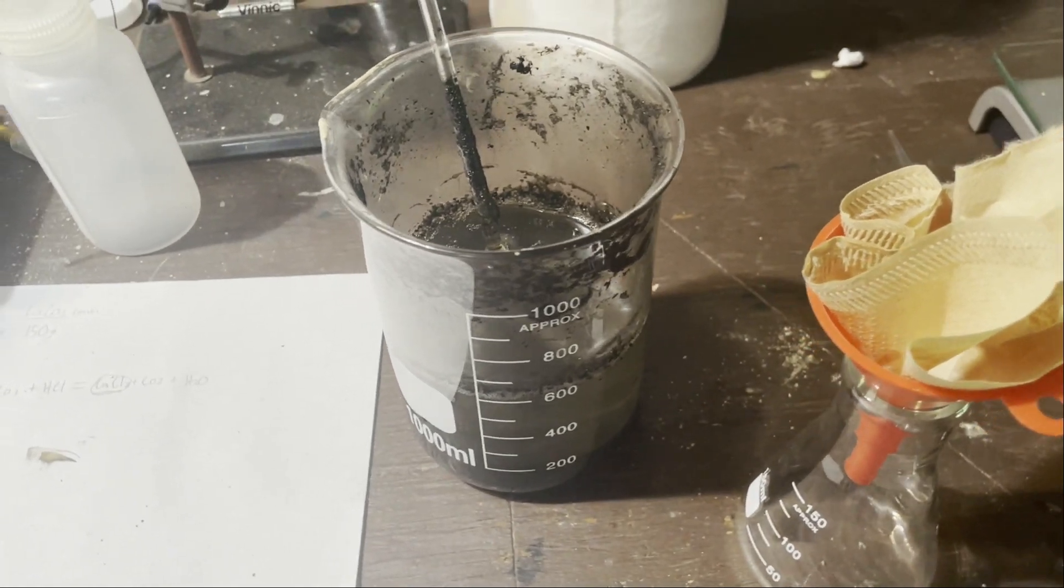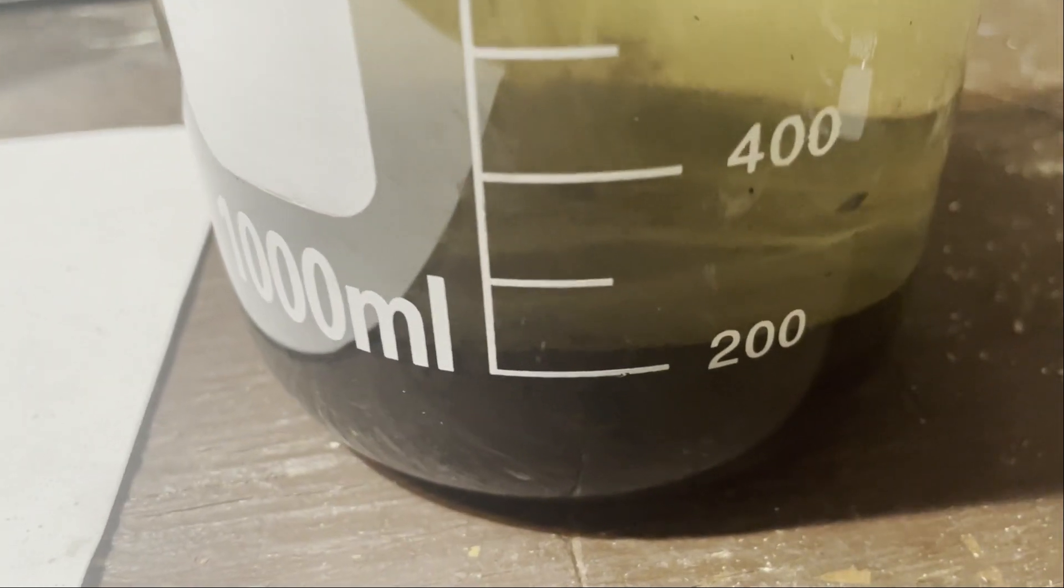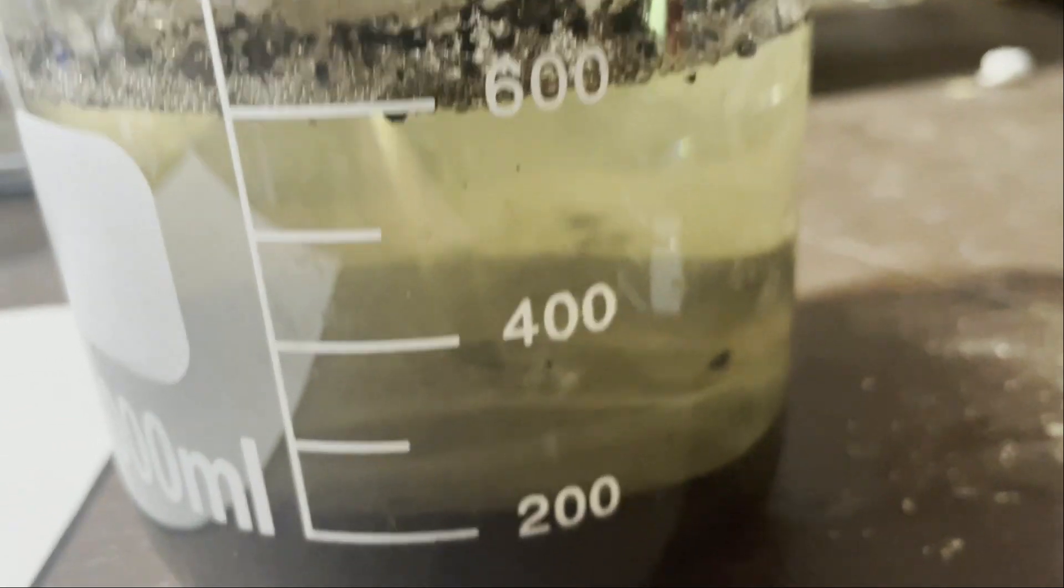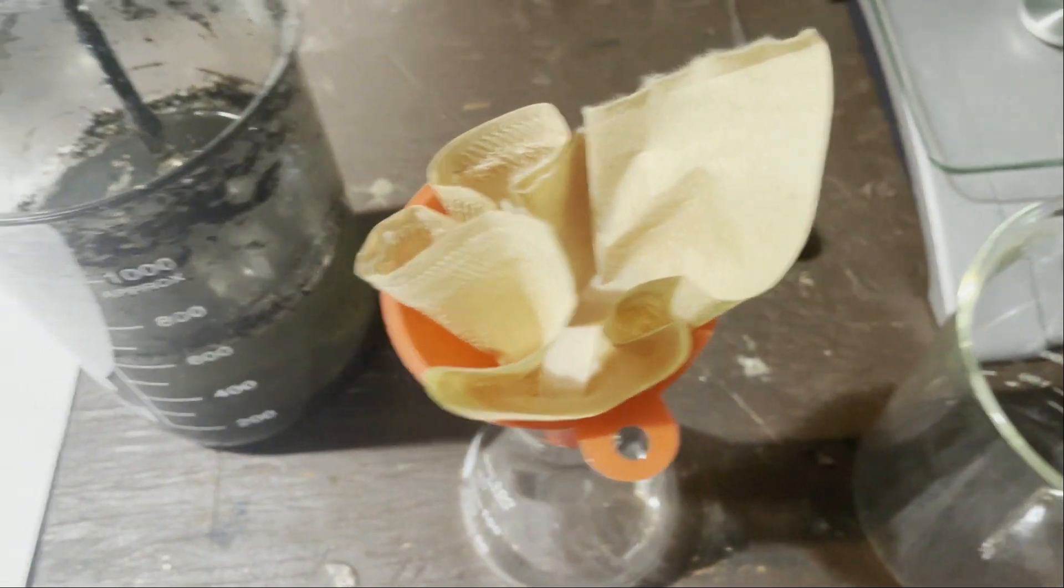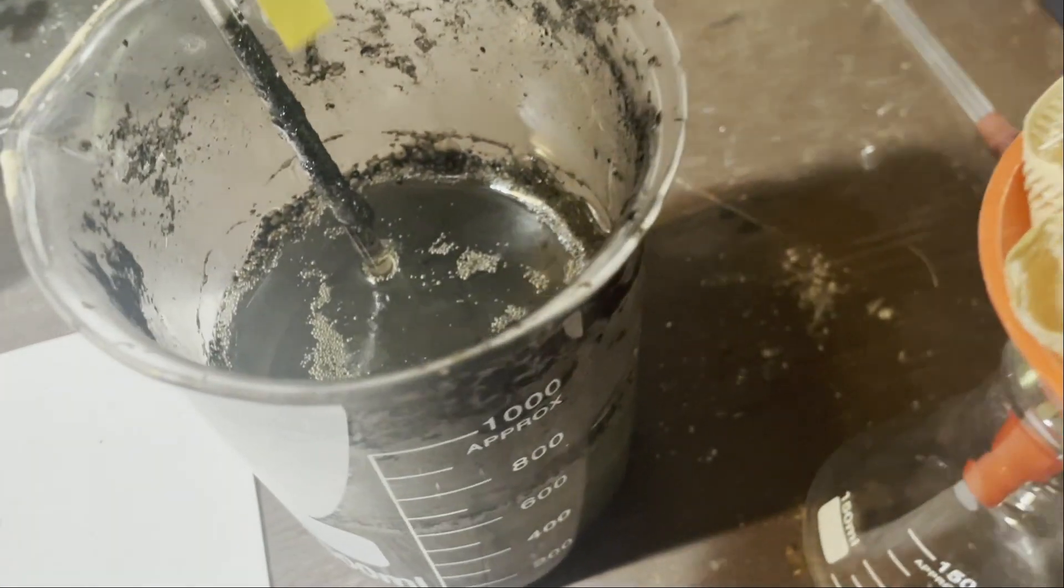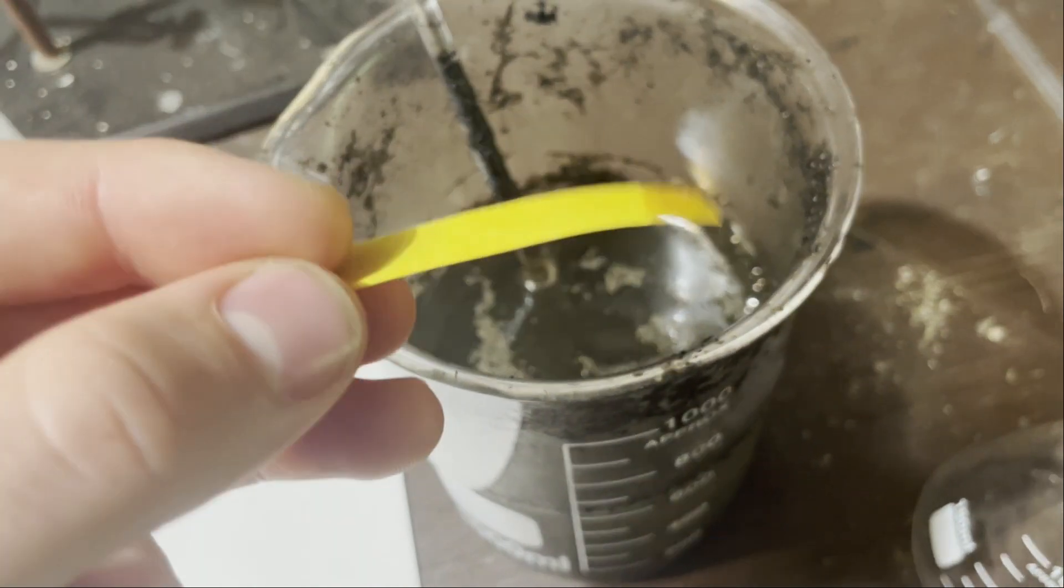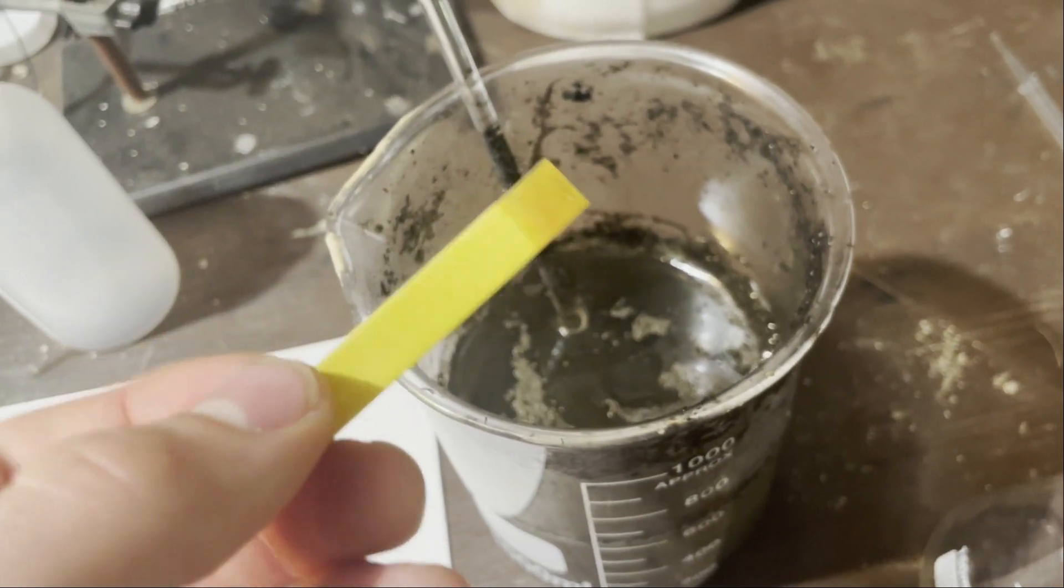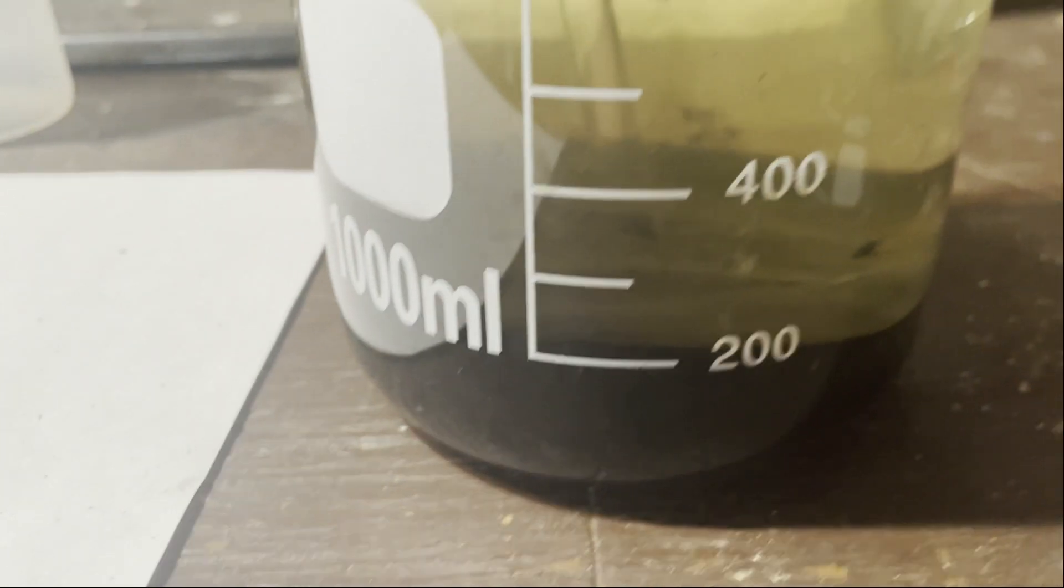Here is my solution after I have finished neutralizing all of the ashes. There is a lot of stuff in the bottom. But, it's also settled out fairly clear. So, now all I need to do is filter it. And, here's the pH. Got a pH strip. It's perfect. Not basic and not acidic. So, that means there shouldn't be anything in here dissolved except salts. Which is nice. I will come back once it's all filtered.